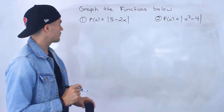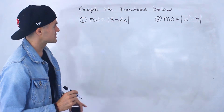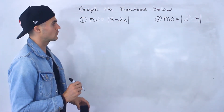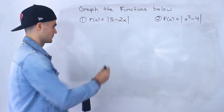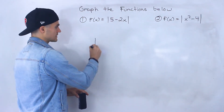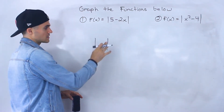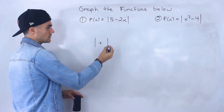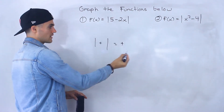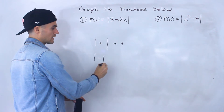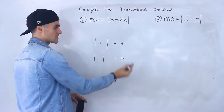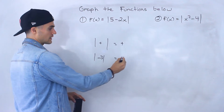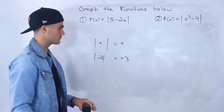Starting with number one, we've got f(x) equals the absolute value of 5 minus 2x. What do absolute values do? They basically ensure that everything is going to be positive. If we end up having a positive value, it stays positive. But if we end up having a negative value, the absolute value turns it into a positive. So the absolute value of negative 3 would be positive 3.